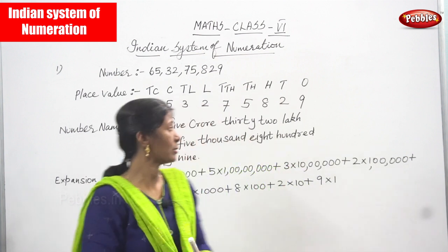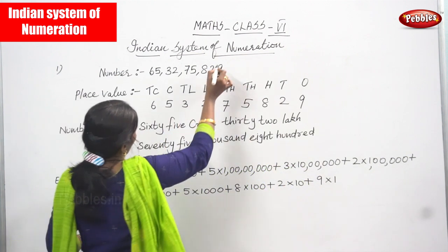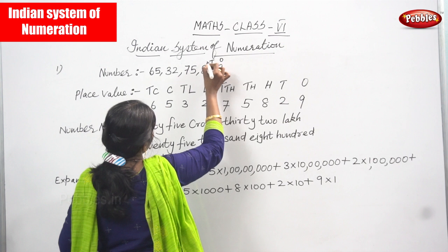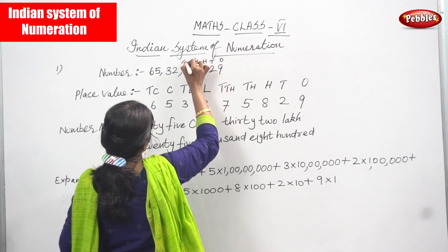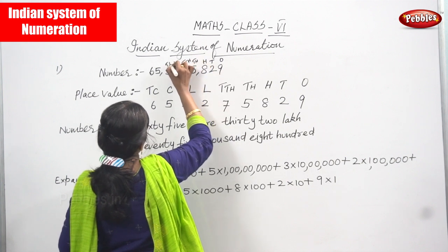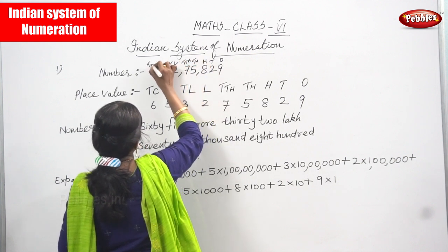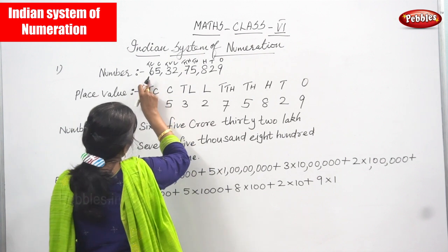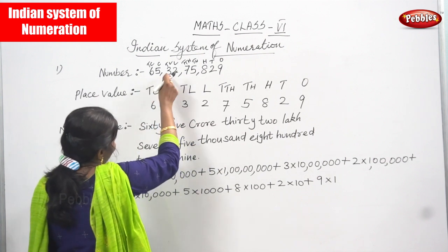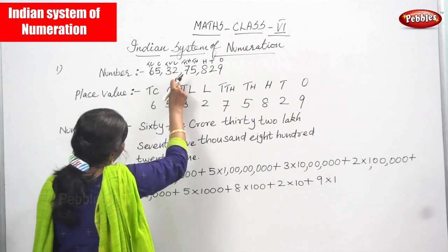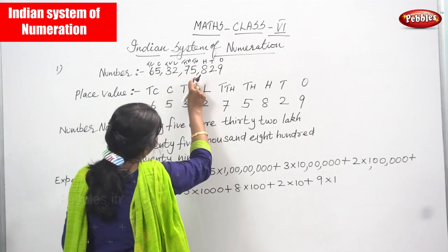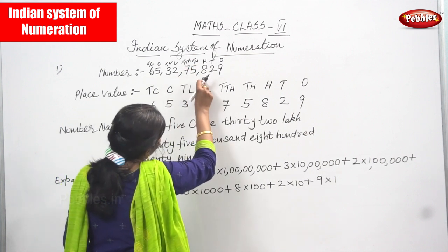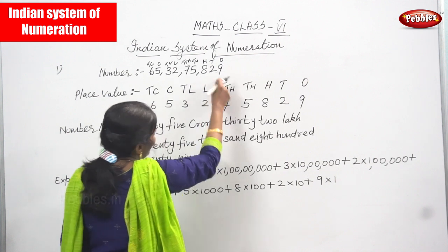First I write the place values: ones, tens, hundred, thousand, ten thousand, lakh, ten lakh, crore, ten crore. TC means ten crore, C means crore, TL means ten lakh, L means lakh, TTH means ten thousand, TH means thousand, H means hundred, T means tens, and O means ones.